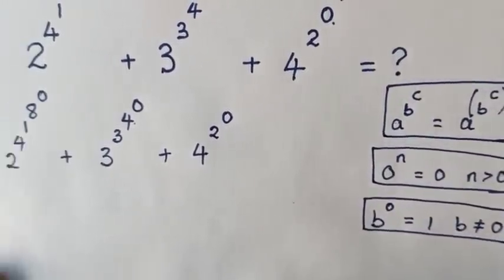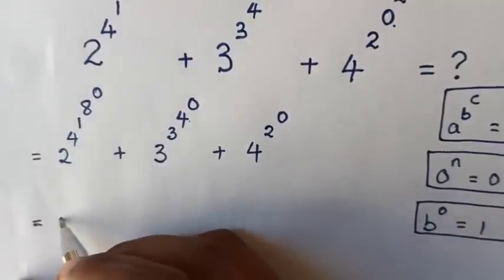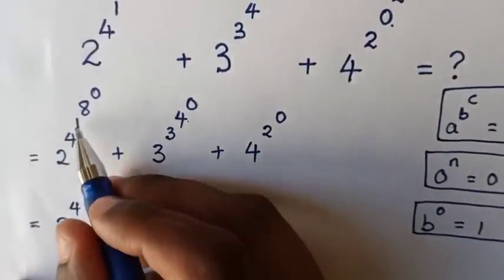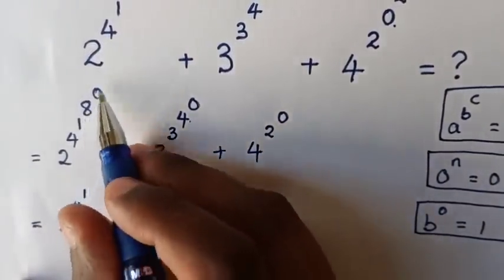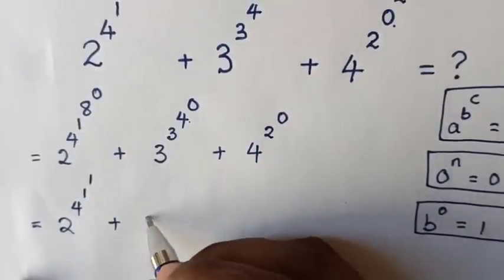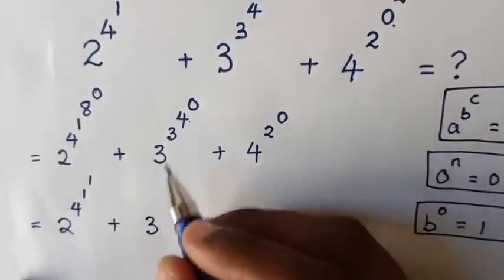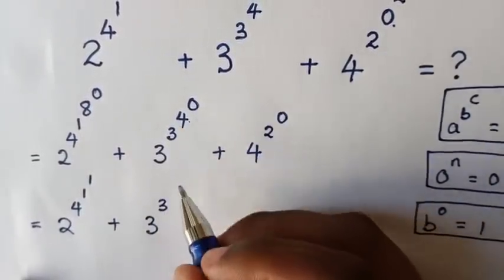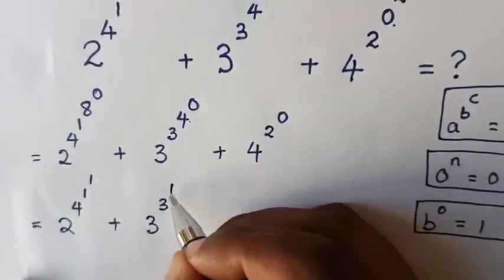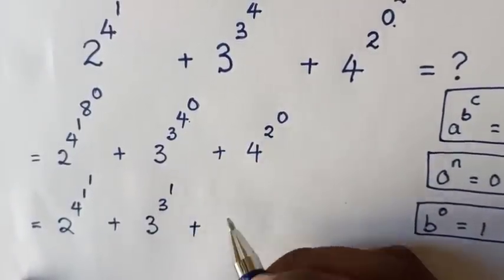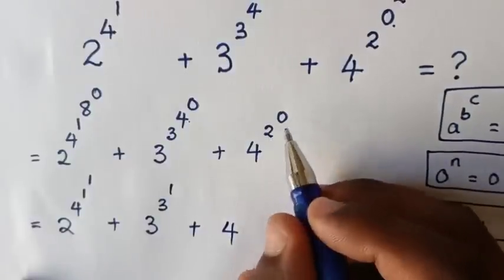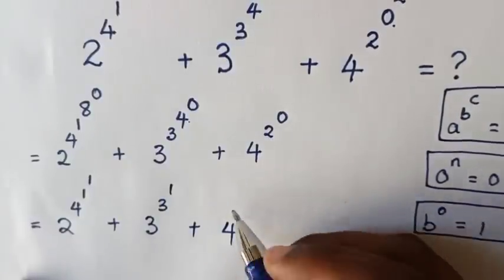In our exponents it will be 2 power of 4 power of 1, then 8 power of 0 is 1, plus 3 power of 4 power of 0 is 1, plus 4 power of 2 power of 0 is 1.